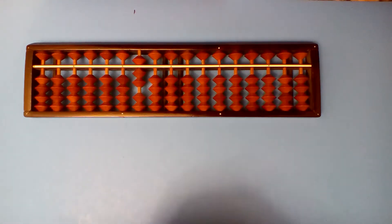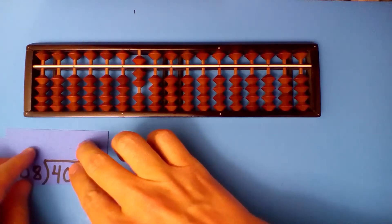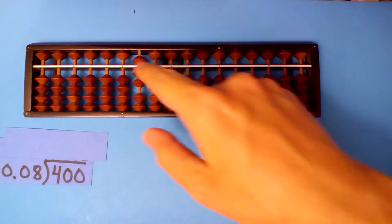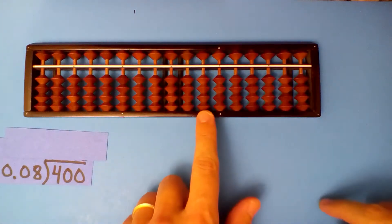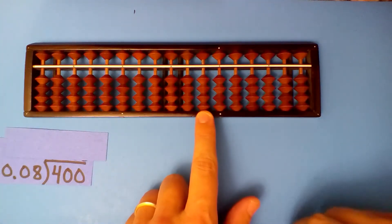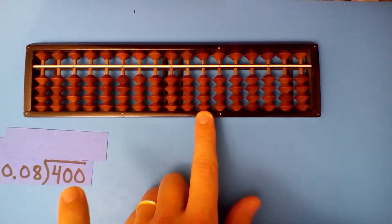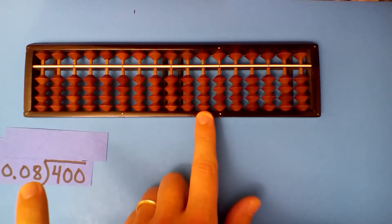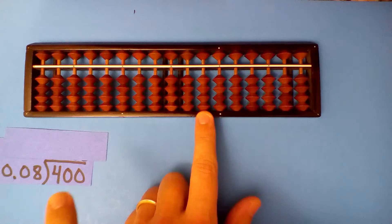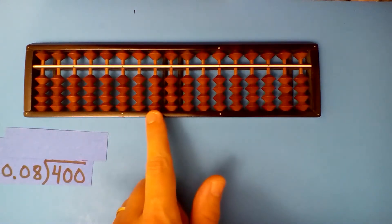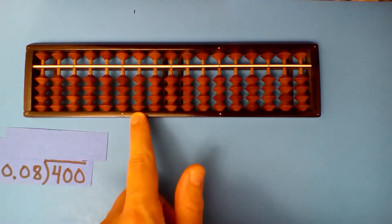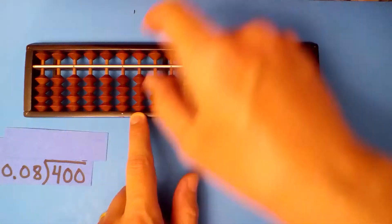What is 400 divided by 0.08? Start on the tenths and hundredths — three digits minus one digit. So the dividend has four more digits: one, two, three, four. And we set up our dividend.